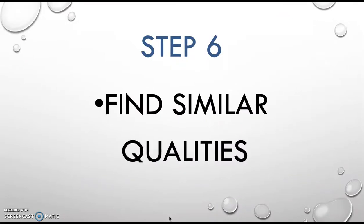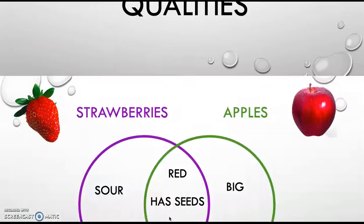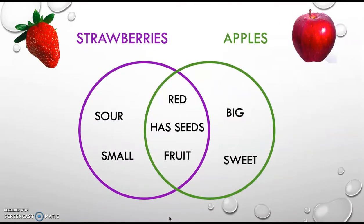Step six, find similar qualities. They are red, they have seeds, and they are a fruit.